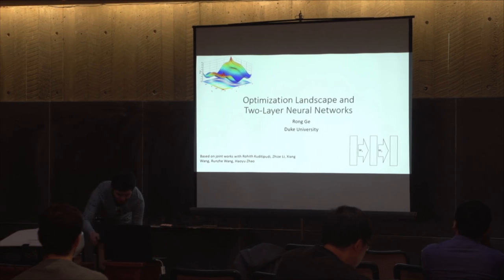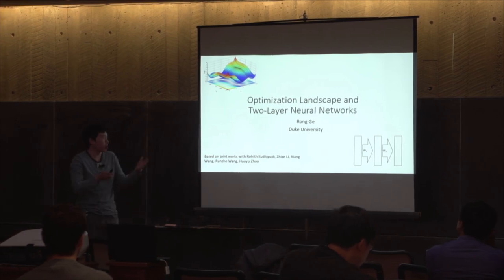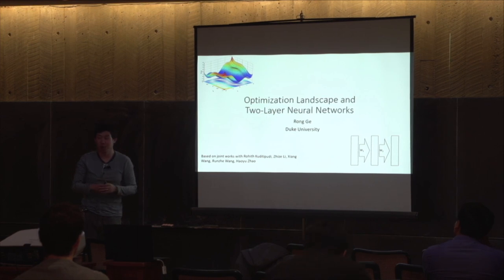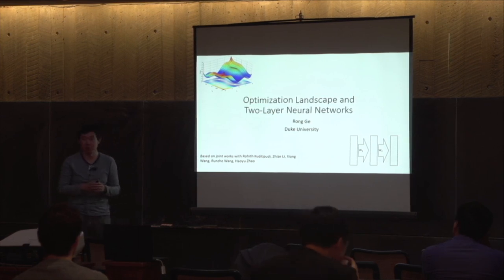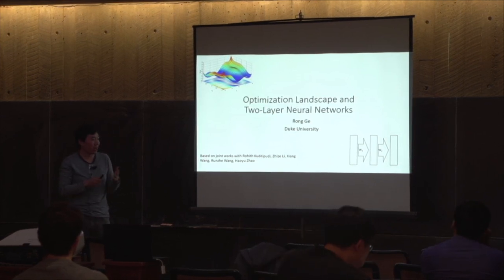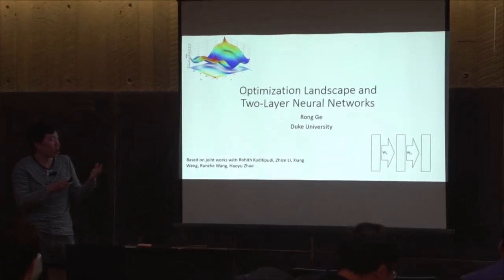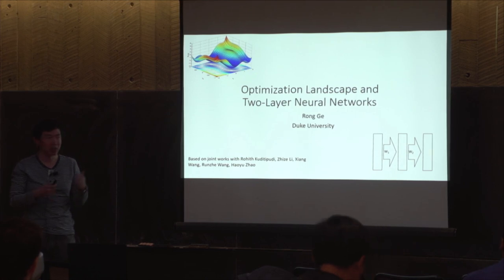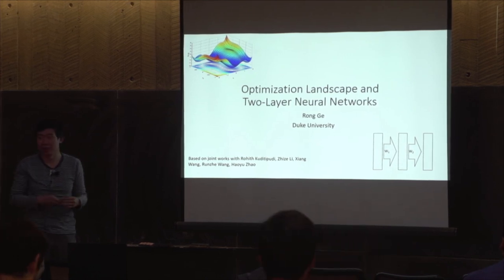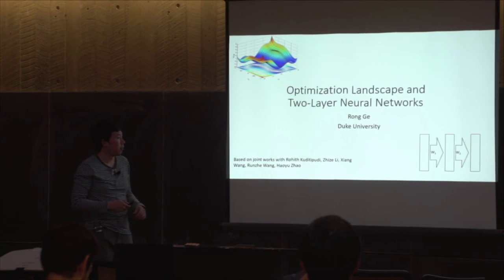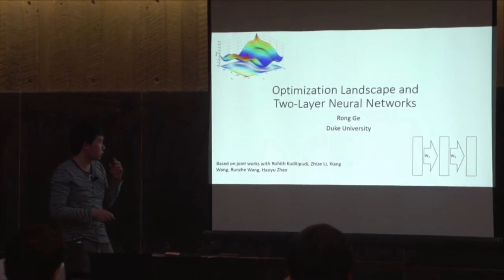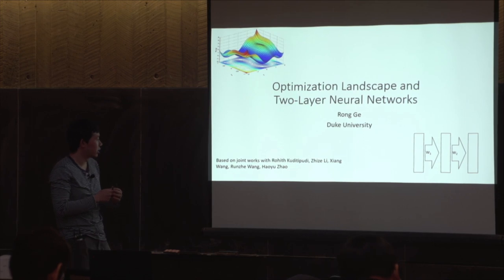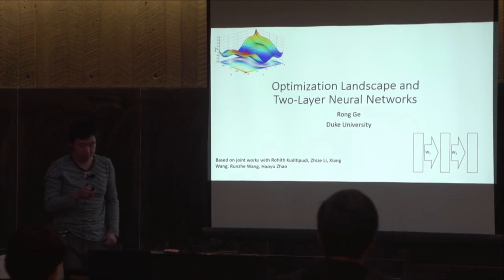So today I'm going to first briefly talk about the kind of work on optimization landscape that I've been doing over the years. Then the talk is more about whether or not there is hope to apply some of these techniques to optimize two-layer neural networks. This is based on joint works with Rohis, Zhizhe, and Xiang, and also Renzhe and Haoyu. So these are two different papers.